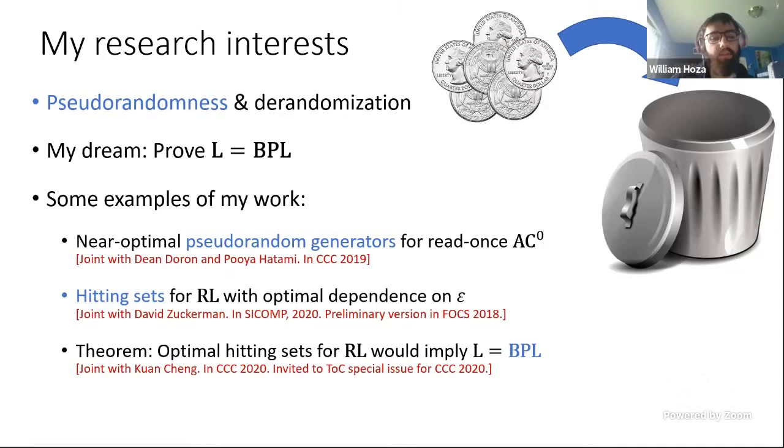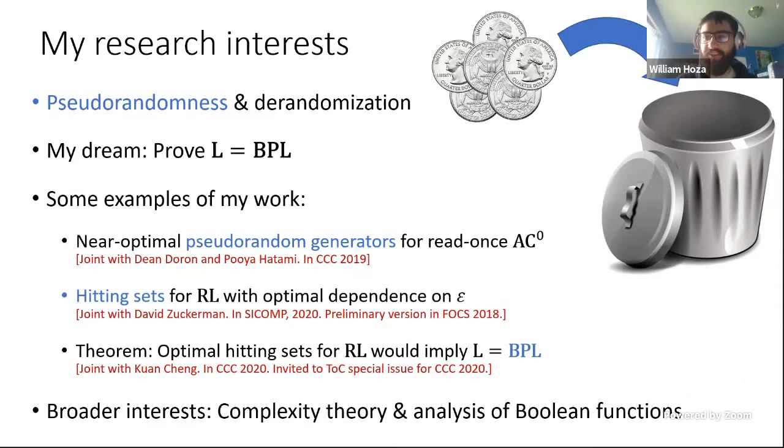And then in a follow-up work, Quan Cheng and I proved that optimal hitting sets for RL actually can be used in a non-trivial way to de-randomize BPL. And so I think those two works kind of go together. So yeah, I mean, more generally, I'm interested in creative approaches to de-randomization. I also, I mean, I'm happy to work on problems that aren't related to pseudorandomness and de-randomization. More generally, I like complexity theory and the analysis of Boolean functions. Anything that has sort of mathematically elegant techniques and then well-motivated computational interpretations, I think is really appealing. So that's all. Thanks for listening. Cool. Thank you very much, William.